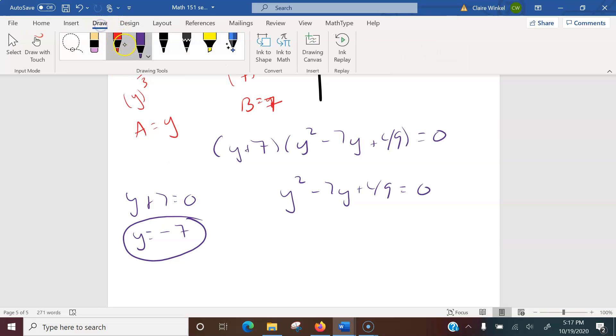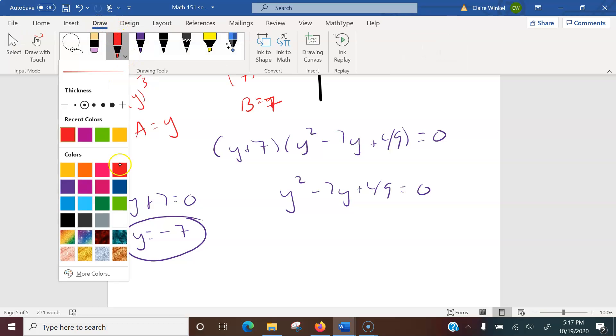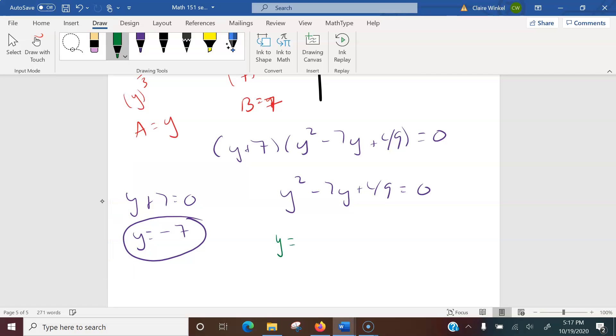Over here, we want to use the quadratic formula. So let's do it in green. Using the quadratic formula, y equals negative negative 7 plus or minus the square root of negative 7 squared minus 4 times 49 all over 2 times 1. So this will give us y equals 7 plus or minus the square root of 49 minus 196, all over 2.